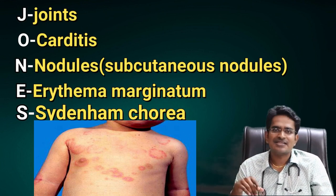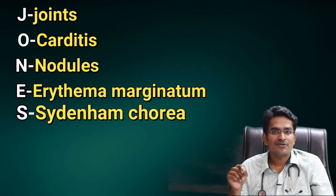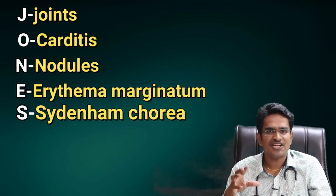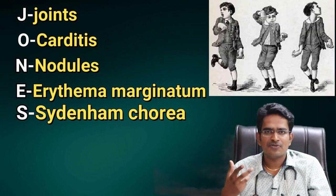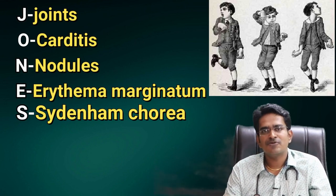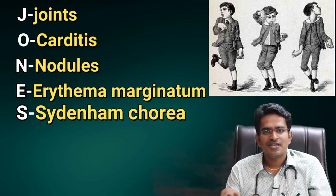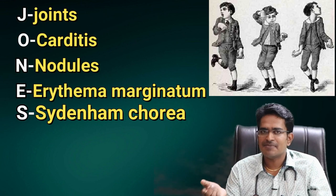The fourth feature is Sydenham's Chorea — this presents as involuntary jerky movements affecting the face and limbs. It is one of the major features of Acute Rheumatic Fever.